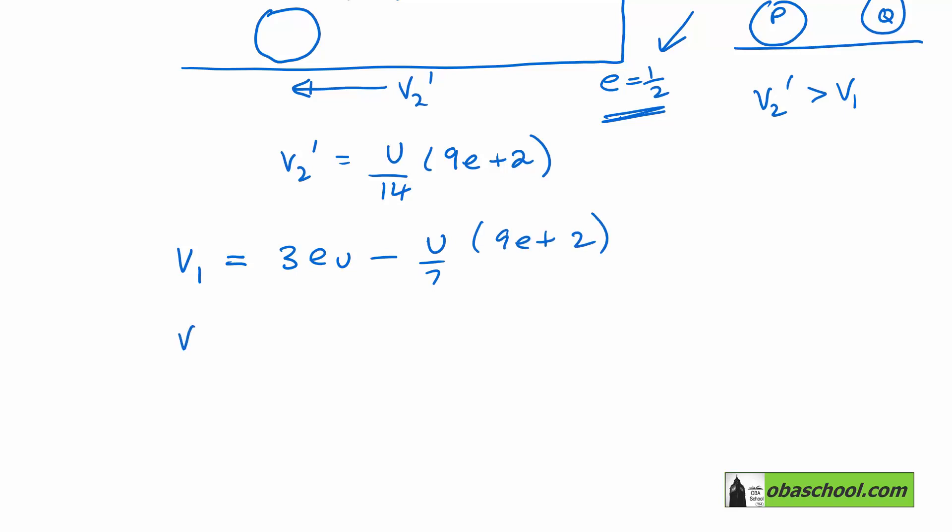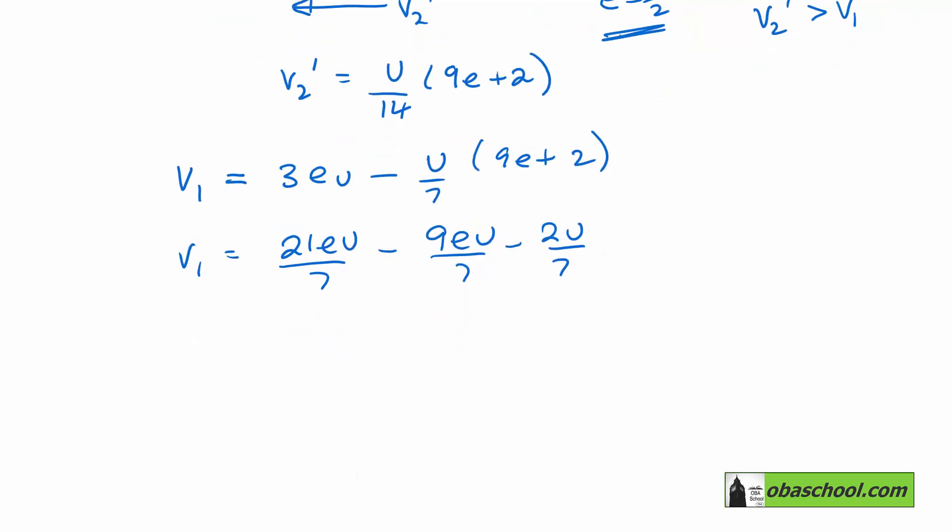So V1 is equal to 21EU over 7. Take away 9EU over 7. Take away 2U over 7. And so V1 will be 12EU over 7. Take away 2U on 7.